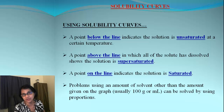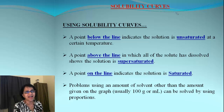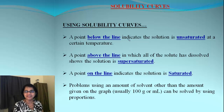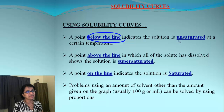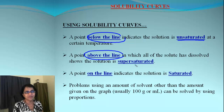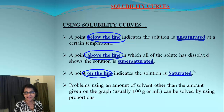We can also use solubility curves to quickly decide whether a solution is unsaturated, saturated, or supersaturated. To do this, find the point which corresponds to the temperature and the amount. If the point is below the line it is unsaturated; if the point is above the line it is supersaturated; and if the point is on the line it is saturated.